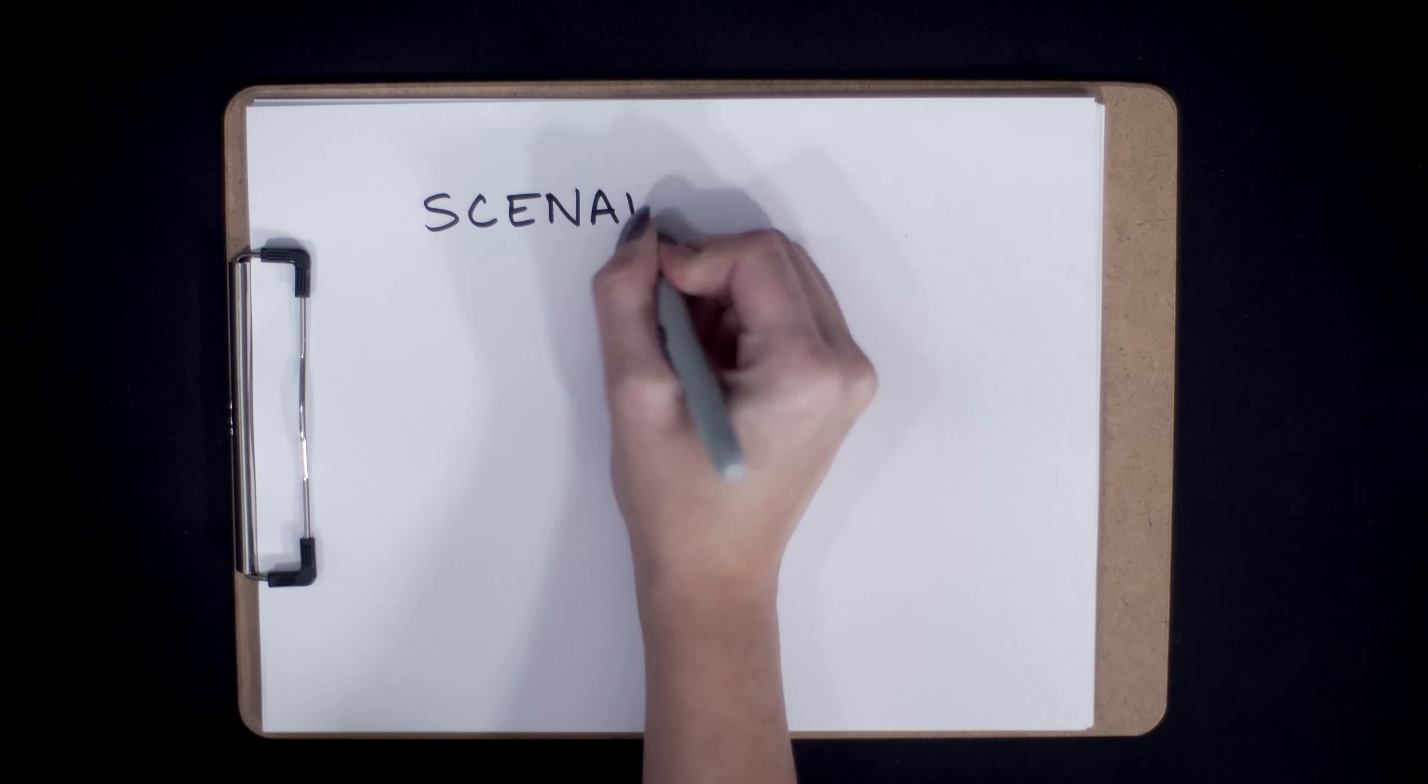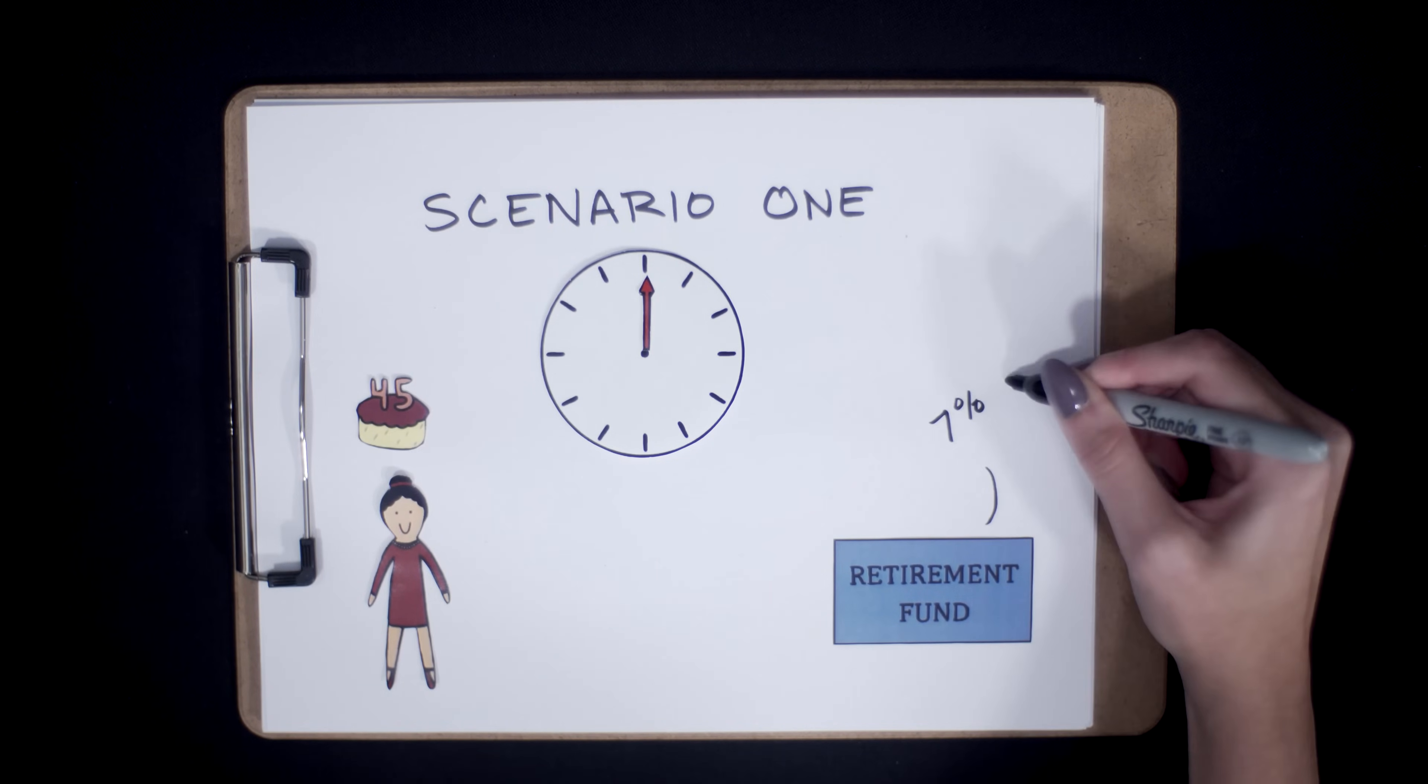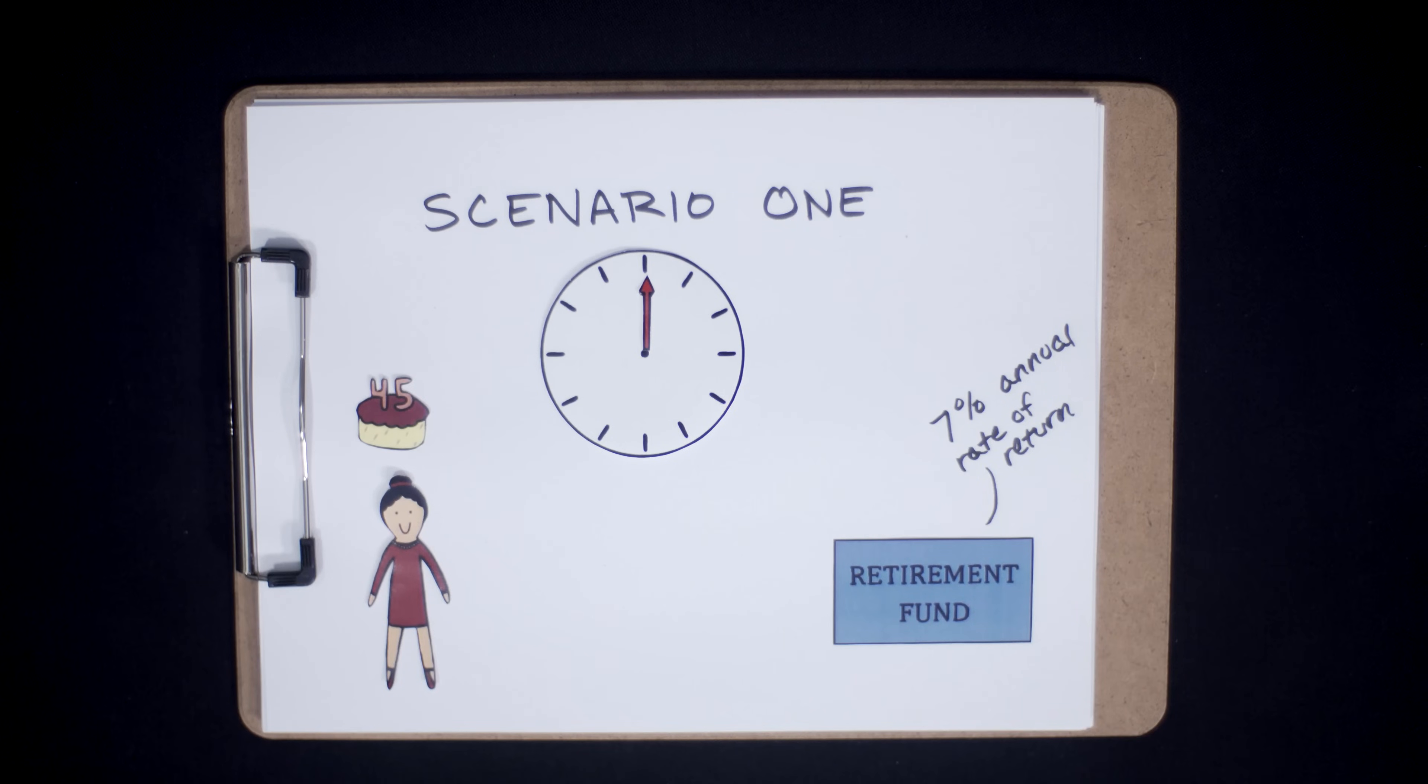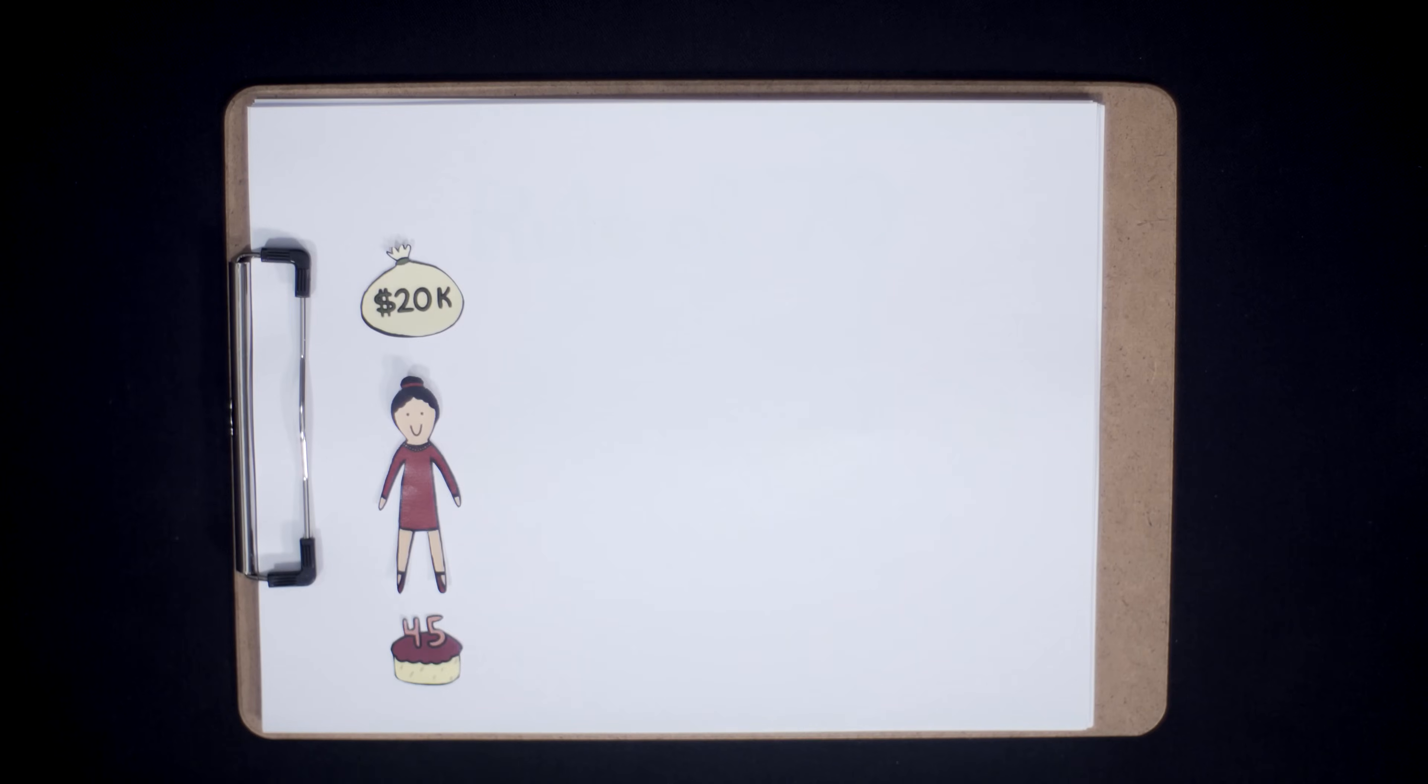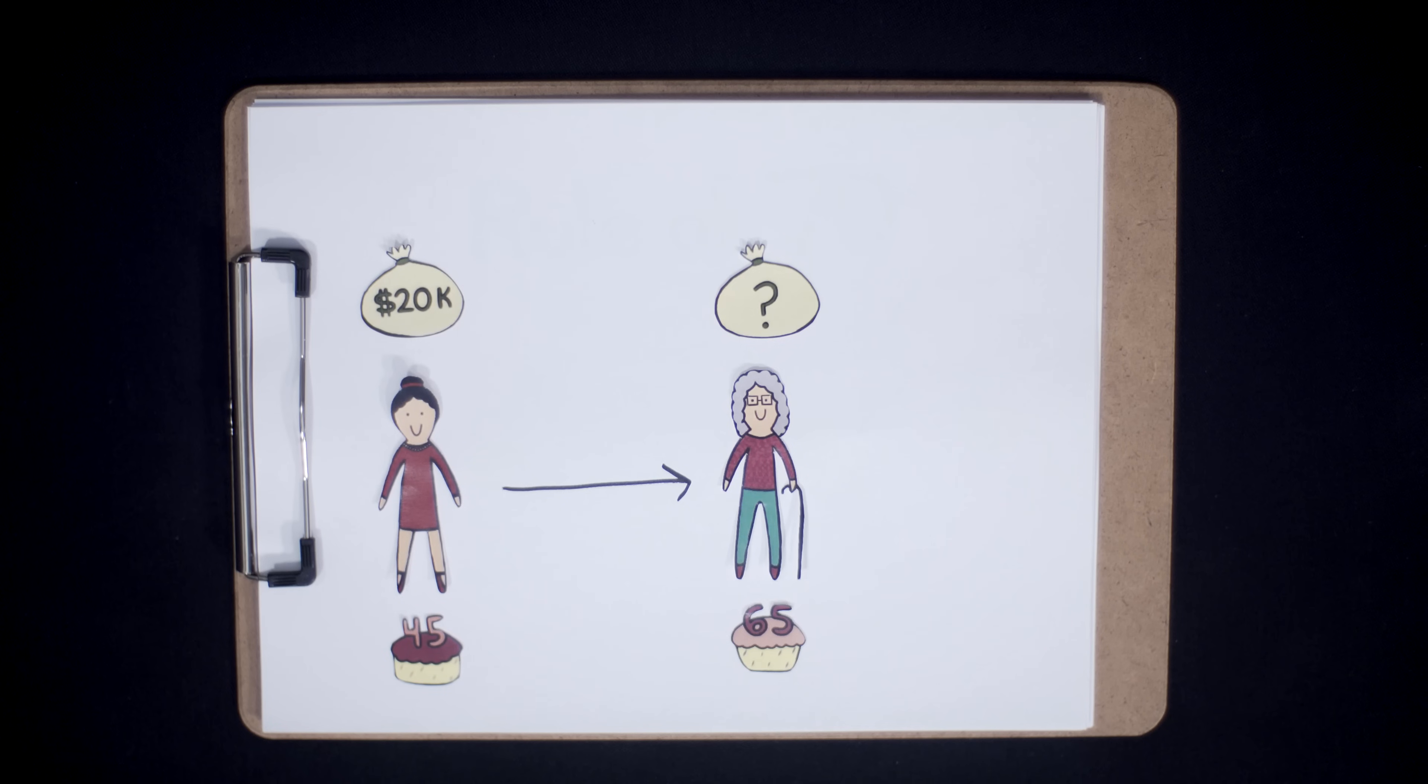Let's take these two investment scenarios. In the first scenario, meet Myopic Mary. She starts saving in her 30s and by age 45 has $20,000. She then invests this money in a retirement fund that earns a 7% annual rate of return and doesn't touch her investment until retirement. How large will Myopic Mary's $20,000 grow to be if it's growing at 7% for 20 years until she turns 65?